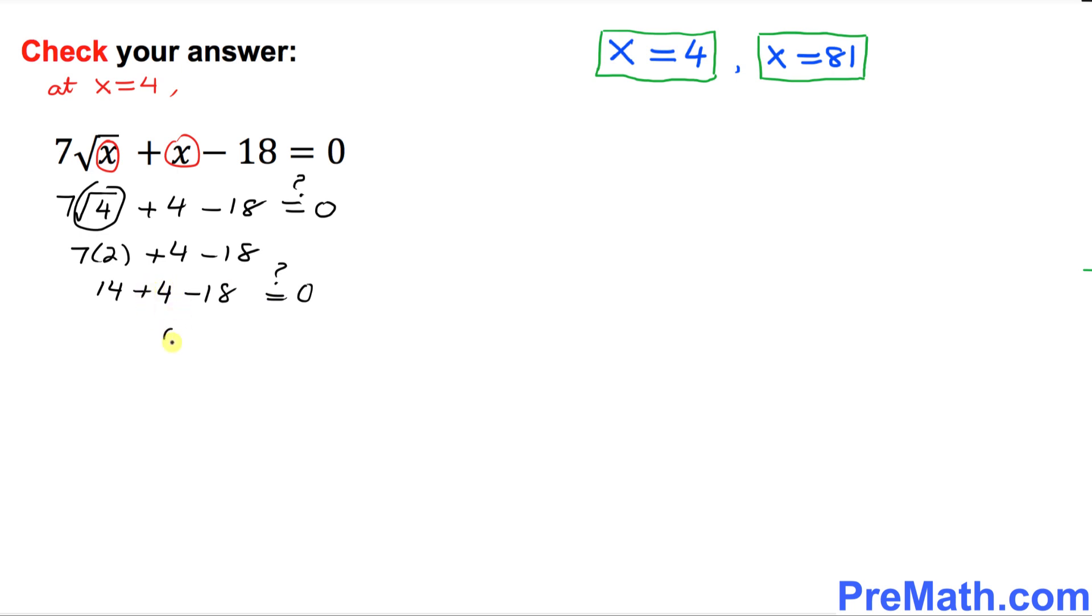Of course, the left hand side equals 0 and the right hand side is 0. My question is, is this statement true? Yes, indeed. This statement is true. That means our answer is checked. So x equal to 4 is our good answer.